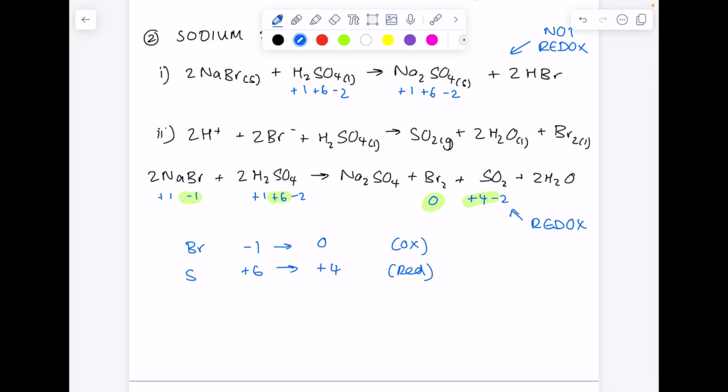In terms of observations that take place, we produce Br2, so we will see a brown liquid.